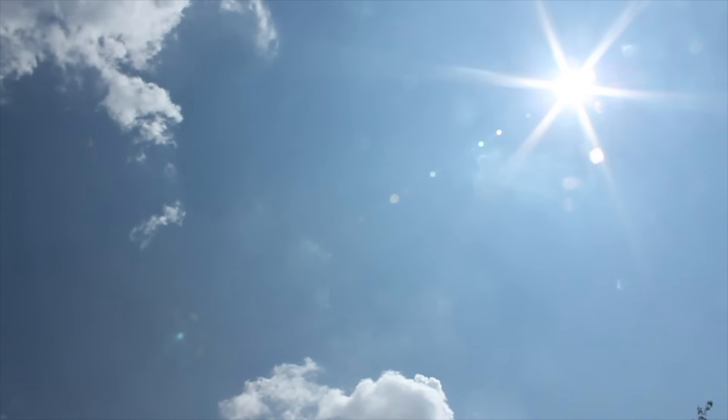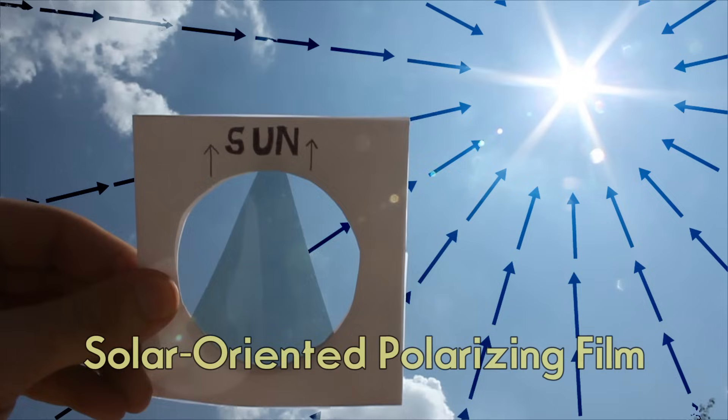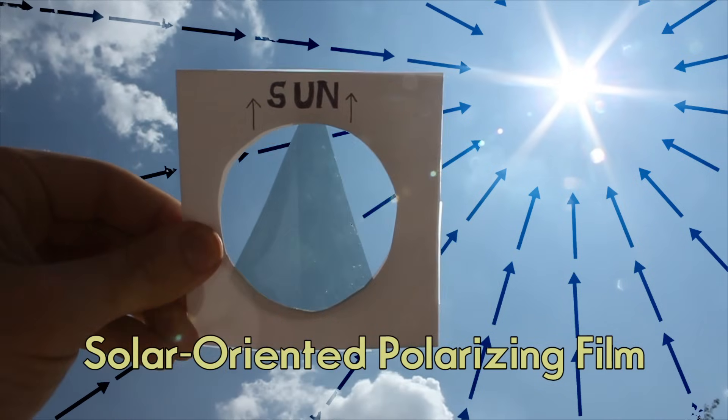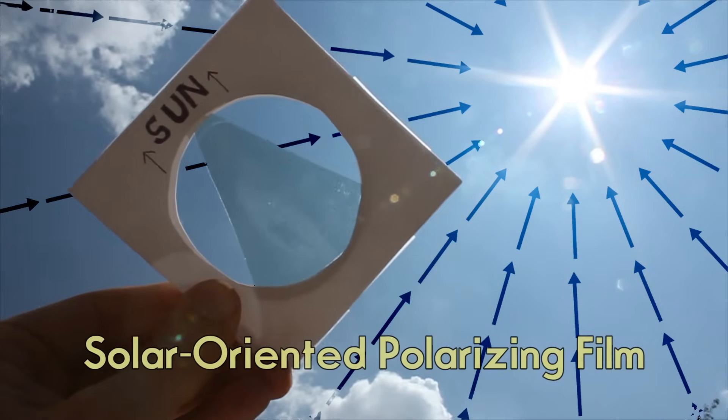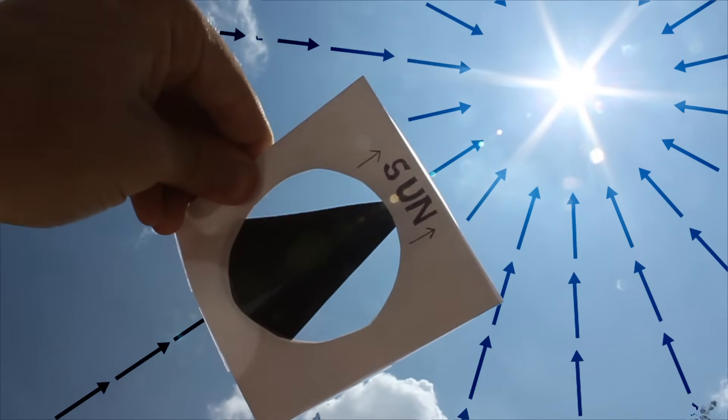Also, as light from the sun passes through the atmosphere, it's polarized in a direction towards the sun when viewed from the earth. Devices like polarized film, sunglasses, or honeybee eyes can detect this orientation and determine the position of the sun even while looking in the opposite direction.